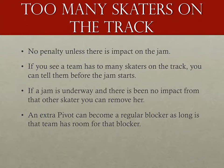Likewise, if there are too many pivots on the track, inform the extra pivot that she must remove her helmet cover. Remember that the full title of a pivot is 'pivot blocker,' and as long as there's still a legal number of blockers on the track — extra pivot included — that pivot is allowed to remain. If you can't get the not-quite-a-pivot to remove her helmet cover after repeat attempts, you can issue an insubordination penalty, but be sure all reasonable attempts have been made first. Any pivot in the penalty box from the previous jam must remain a pivot. If two are lined up, it's the one closest to the referee making the request.